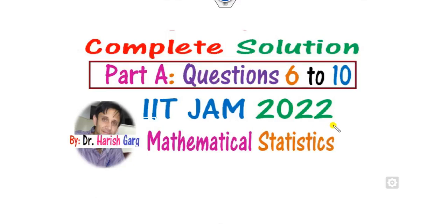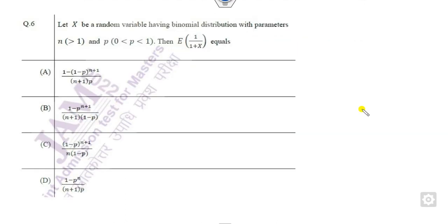Hello everyone, welcome to the next video on IIT Jam 2022 Mathematical Statistics. Today we will see how you can solve question numbers 6 to 10 with some shortcut tricks. So what is question number 6? You have to find the expected value where x follows the binomial distribution. That is a very simple task.